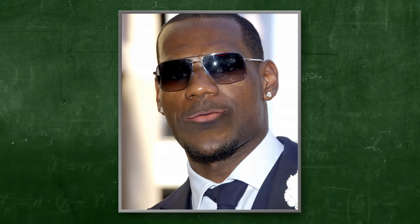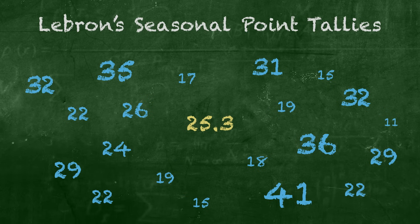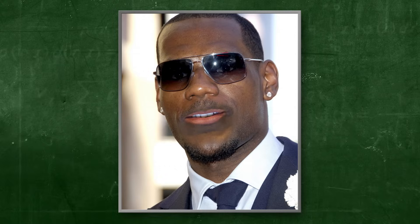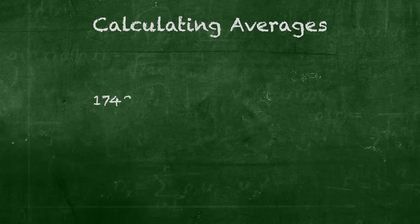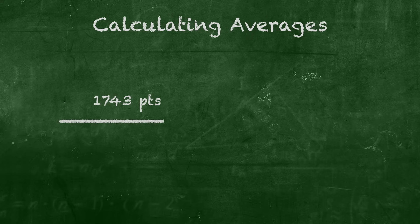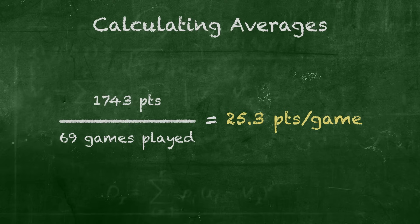Calculating point averages is how I roll. It's the most efficient way of keeping track of how players generally score over a season of basketball. Finding a seasonal point average gives us a number that all the point totals from the season are grouped around. Simply add up all the numbers in your set and divide by the number of data points. For this past NBA season, we'd add up all my point totals from each game, divide by the total number of games in the season, and you arrive at my season average: 25.3 points per game.